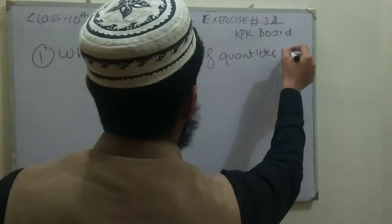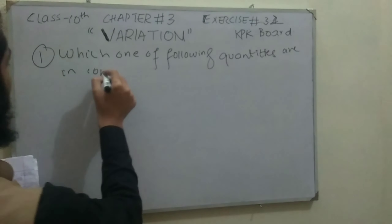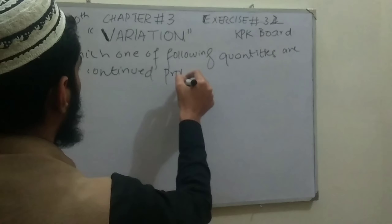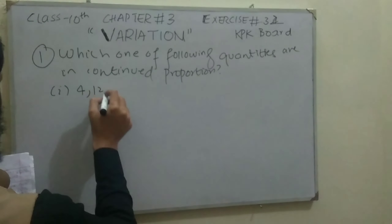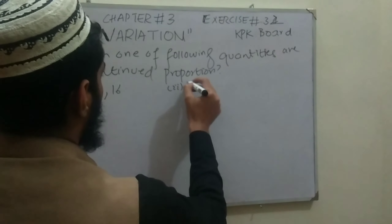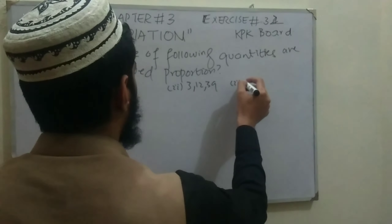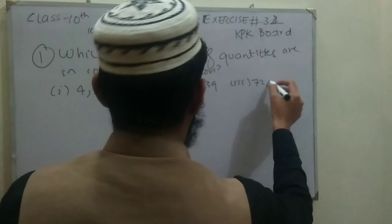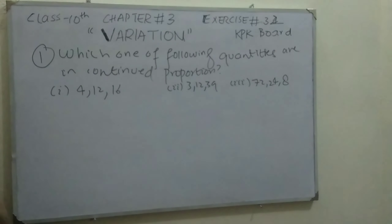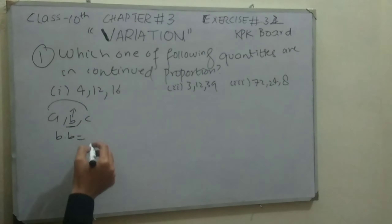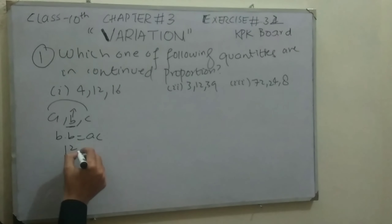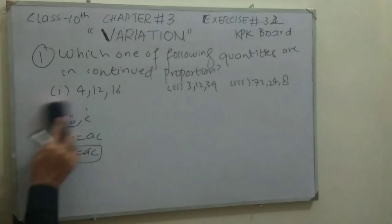In Exercise 3.2, Question 1 asks which of the following quantities are in continued proportion. There are three parts: Part 1 is 4, 12, and 16; Part 2 is 3, 12, and 39; Part 3 is 72, 24, and 8. We learned in Exercise 3.1 the definition of continued proportion: for three numbers a, b, c, the product of the middle number with itself equals the product of the extremes, so b² = ac.